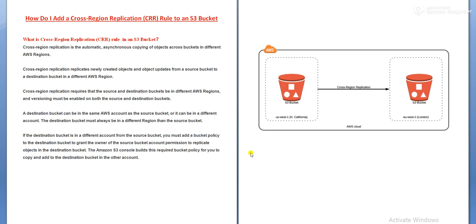Before going into the lab session, I want to give an overview of cross-region replication. In this diagram, one bucket has been created in US-West-1 region and another bucket has been created in EU-West-2 region — one bucket is in North California and another is in London. If cross-region replication is enabled and I put some contents or objects in one bucket, they will be replicated to the other bucket in a different region.